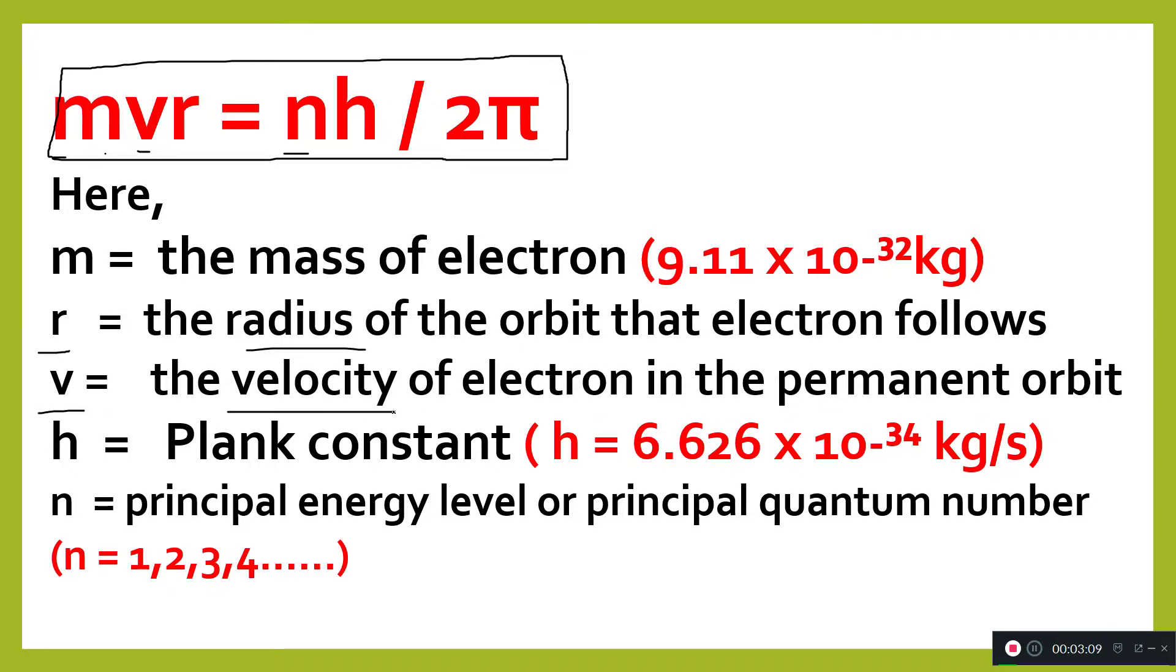H is Planck's constant, 6.626 times 10 to the power minus 34 kilogram meter squared per second. N is the principal energy level or principal quantum number - 1, 2, 3, 4, and so on.